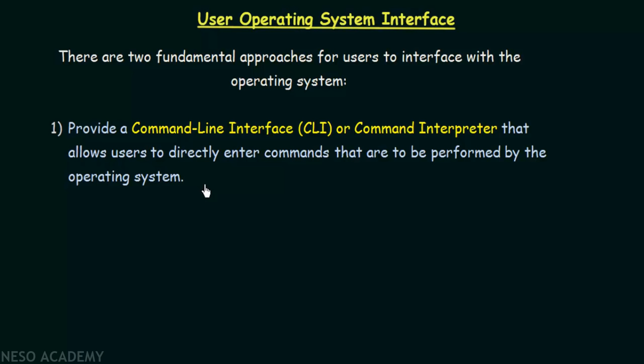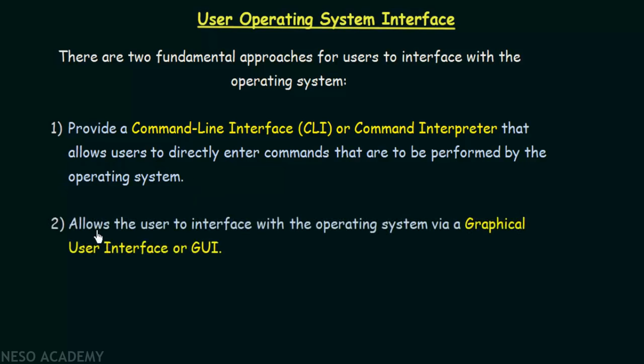In the CLI, the user has to remember all the commands needed for performing certain tasks. The second approach is to interface with the Operating System via a Graphical User Interface or GUI. The GUI is the most commonly used and most user-friendly kind of interface, used in day-to-day life. It features a desktop with menus, and using a mouse or keyboard you can interact with the Operating System — even getting to this video required using your GUI.